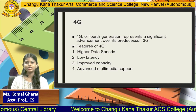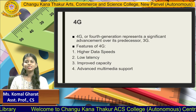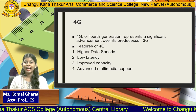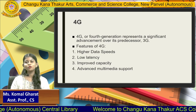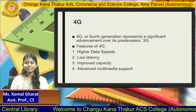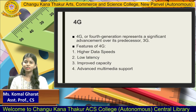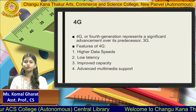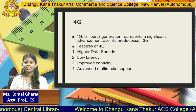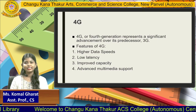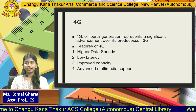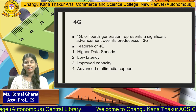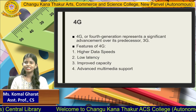Next, 4G or fourth generation represents a significant advancement over its predecessor, 3G. More advanced features are included in 4G compared to 3G. The features of 4G are: higher data speed — it transfers data more quickly compared to 3G. Next is low latency — latency is the time to send data from sender to receiver. 4G takes less time to transfer data from sender to receiver, so it has low latency. Then, improved capacity — because of more advanced features and low latency, 4G has improved capacity to transmit and fetch data.